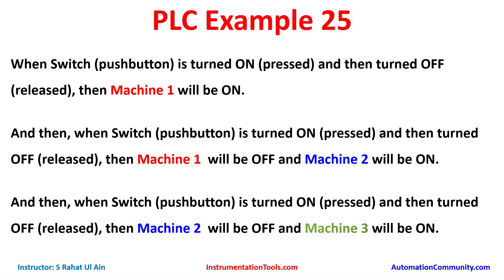Example 25: when the switch is turned on and then turned off, machine one will be on. When the switch is turned on and then turned off again, machine one will be off and machine two will be on. When the switch is turned on and turned off a third time, machine two will be off and machine three will be on. So there is a single push button — first press and release turns machine 1 on, second press and release turns machine 1 off and machine 2 on, third press and release turns machine 2 off and machine 3 on.